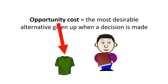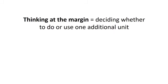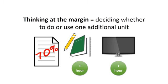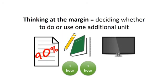When making decisions about trade-offs, oftentimes we do something called thinking at the margin. This means you are thinking about whether doing or getting one more unit is worth it. For example, let's say you have two hours before you go to bed. You could spend one hour studying for a test and one hour watching TV. Spending one hour studying might get you a 70%, so you think that studying an additional hour could help you get a 90% or even better. As you are deciding whether to study for two hours and get the 90% or not, you are thinking at the margin. If you decide to study the additional hour, then watching TV is the opportunity cost of that decision.